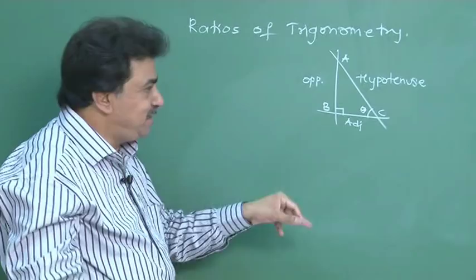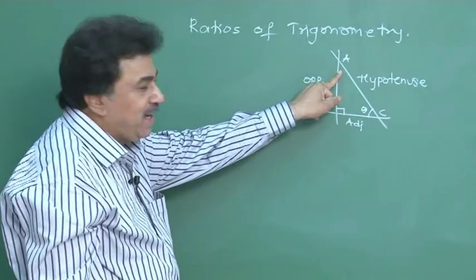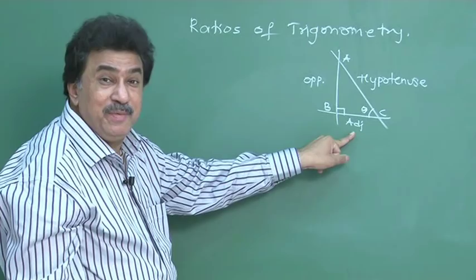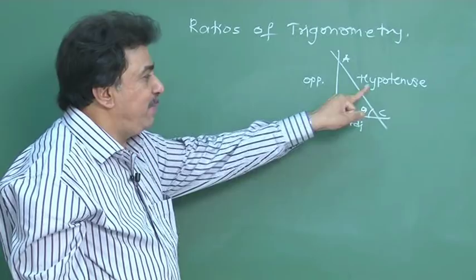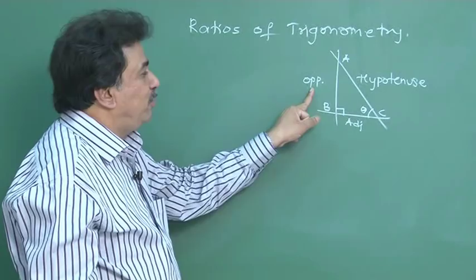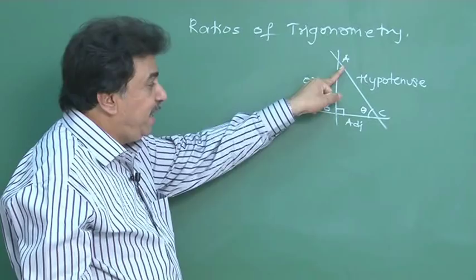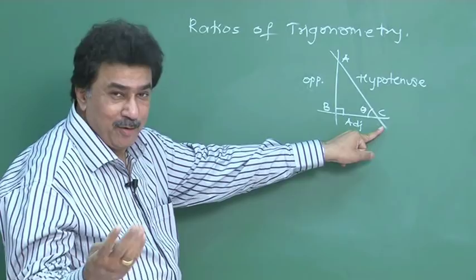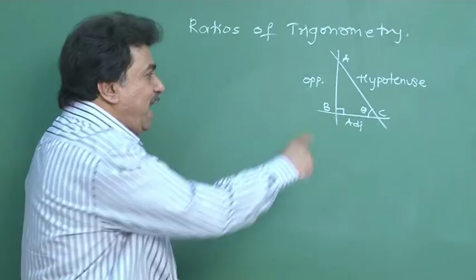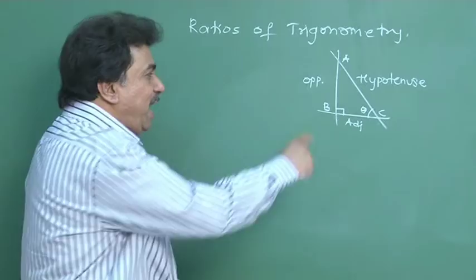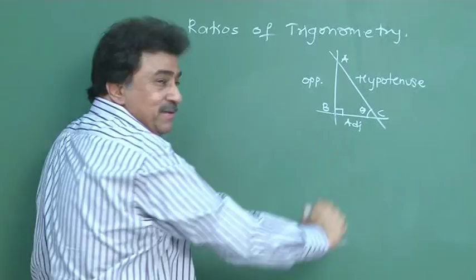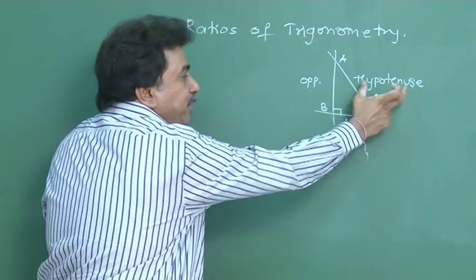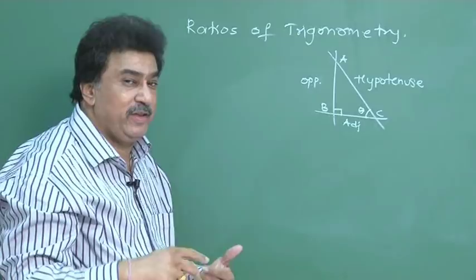There can be a change in the opposite and the adjacent side. For example, if I see from angle A, BC becomes the opposite side and AB becomes the adjacent side. So what changes? The opposite and the adjacent side. But the hypotenuse remains the same. From angle C: opposite is AB, adjacent is BC. From angle A: BC becomes opposite and AB becomes adjacent. These are three sides which will help me find the ratios.